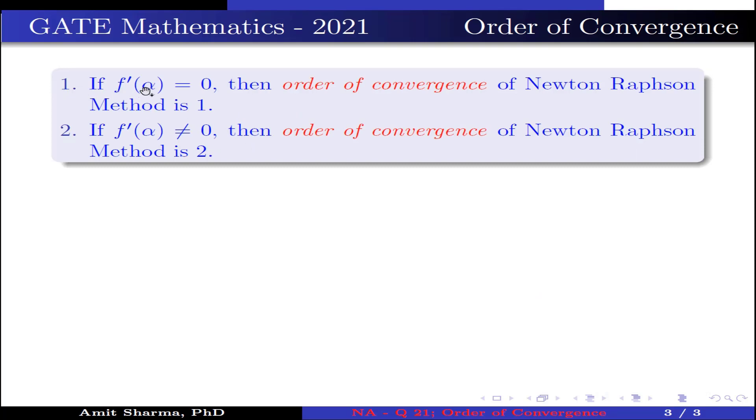Point number 1: If f'(α) = 0, then order of convergence of Newton-Raphson method is 1. Point number 2: If f'(α) ≠ 0, then order of convergence of Newton-Raphson method is 2.